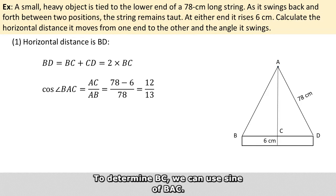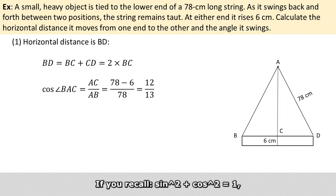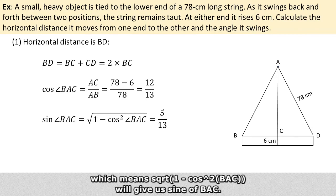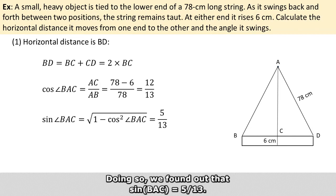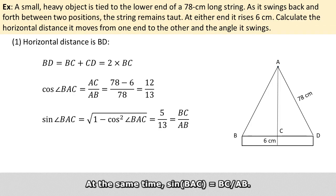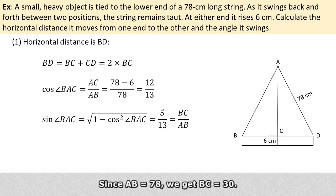And to determine BC, we can use sine of BAC. And if you recall, the square of sine plus the square of cosine equals 1, which means the square root of 1 minus cosine BAC squared will give us sine of BAC. So doing so, we found out that sine BAC equals 5 over 13. And at the same time, sine BAC is also BC over AB. Since AB equals 78, we get BC equals 30.